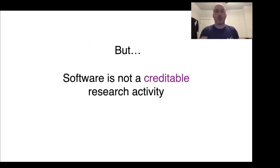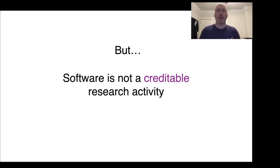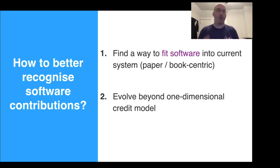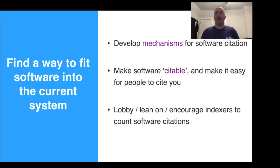But software is not a creditable research activity. Writing research software is not rewarded by the academic system. So how can we better recognize software contributions? We need to find a way to fit software into the current system, which is paper and book centric, and then we need to evolve beyond this one-dimensional credit model.